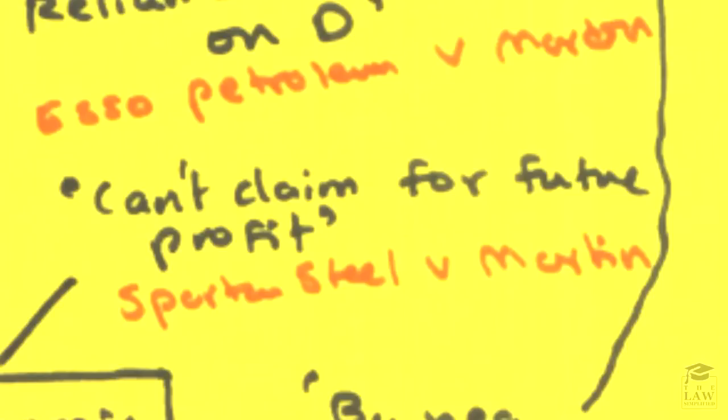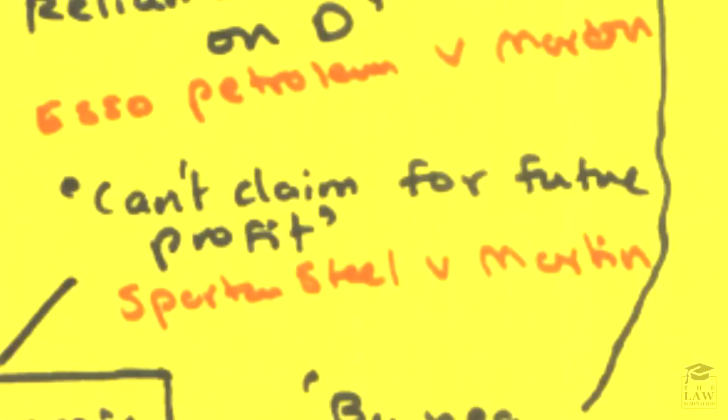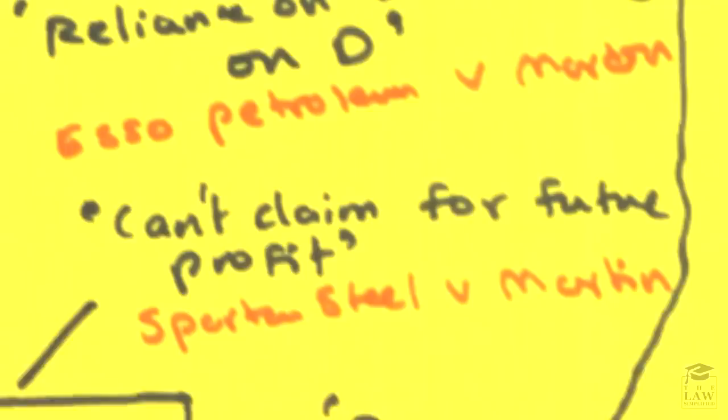An interesting case in this regard is Spartan Steel v Martin. Have a look at that as well. It's a case where there was an electrical failure, in which case the entire factory had to shut down. But the court held that it was unreasonable for the claimants to ask for compensation or for damages for future profit, which might not tangibly be possible to define.